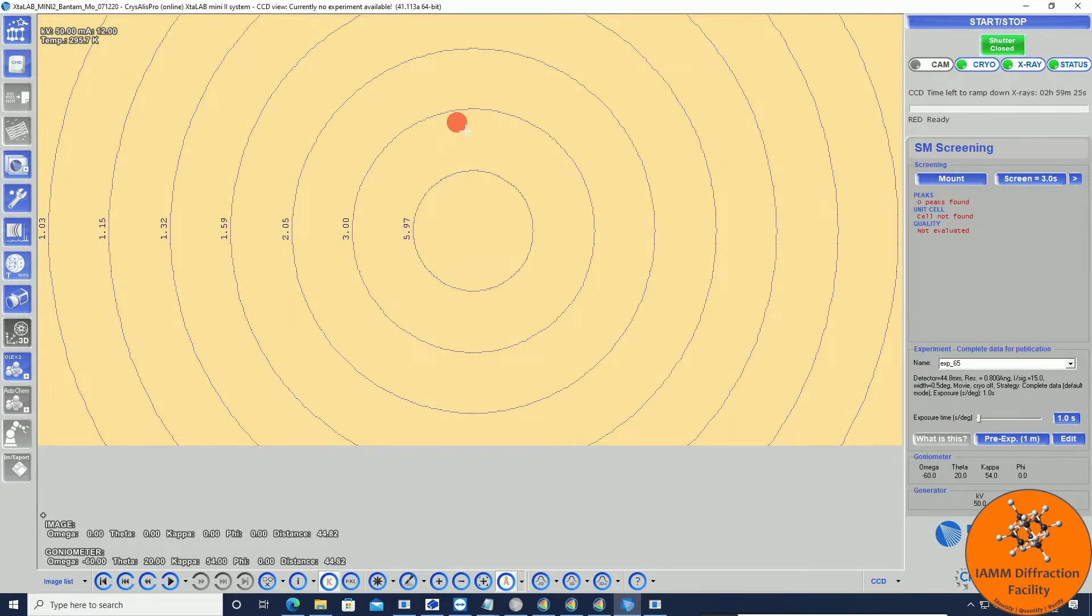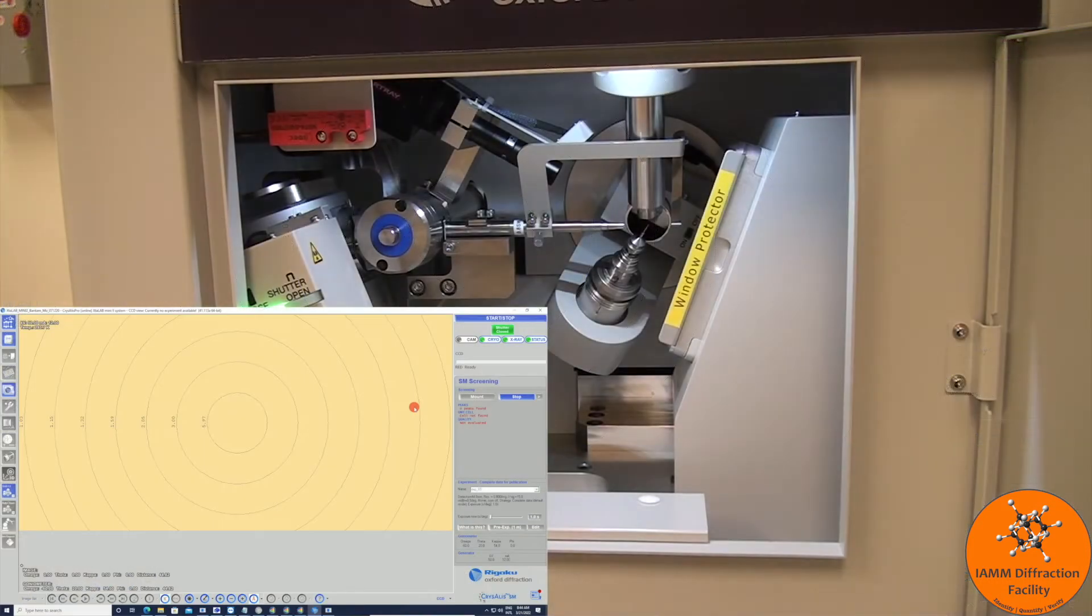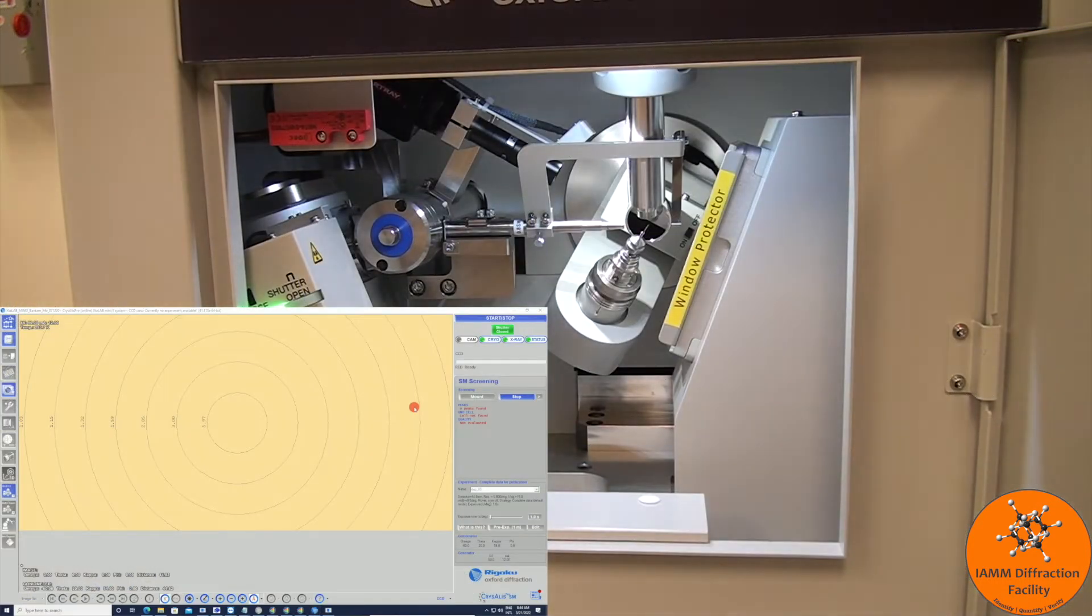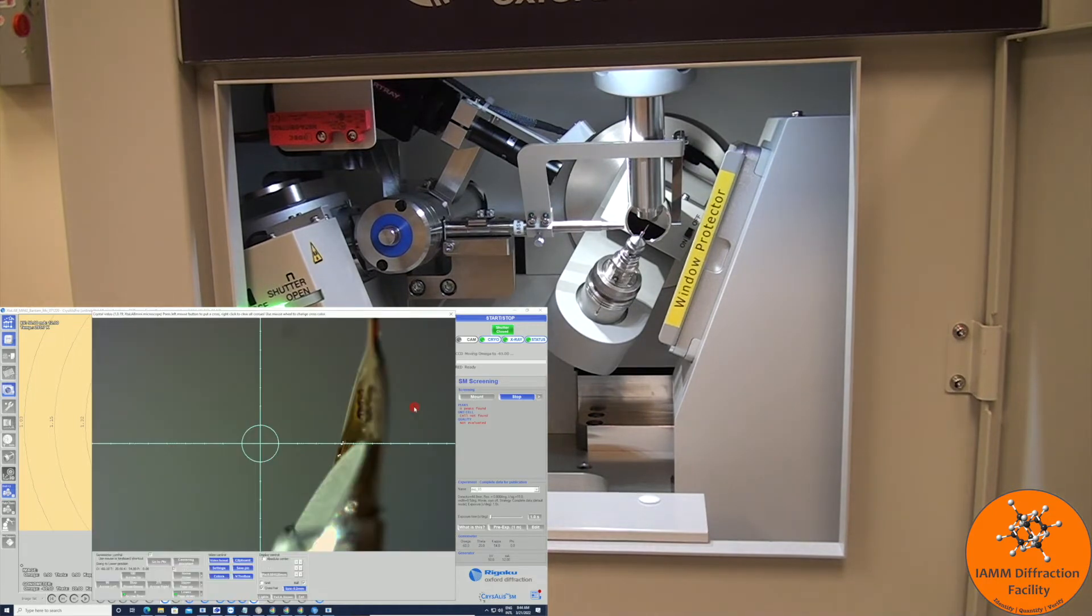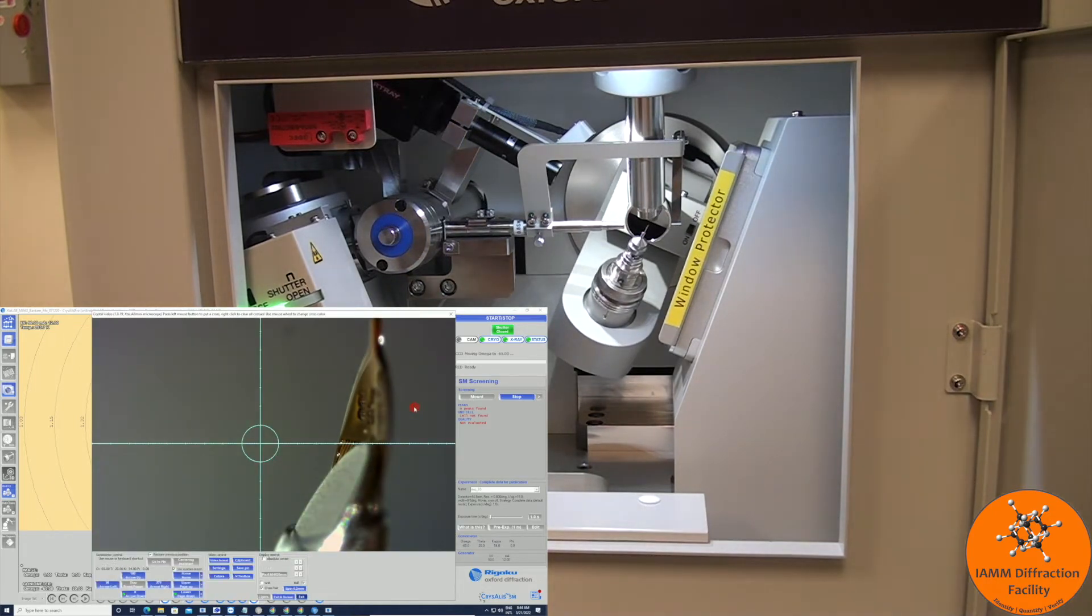In order to make sure that the sample is aligned in the x-ray beam, we can either click this mount button here, or we can hit F12 on the keyboard.